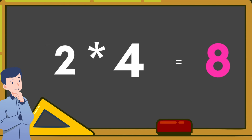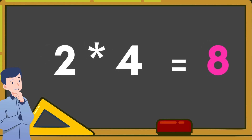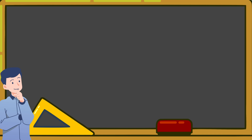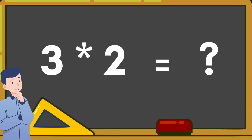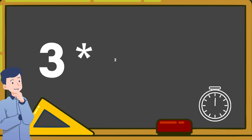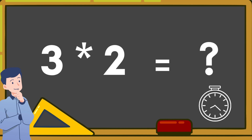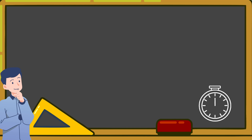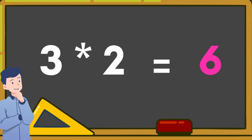That's correct! 2 times 4 is equal to 8. 3 times 2 is equal to — That's correct. 3 times 2 is equal to 6.